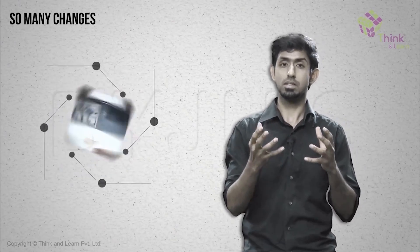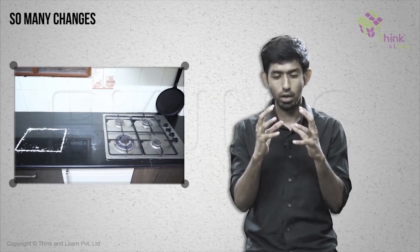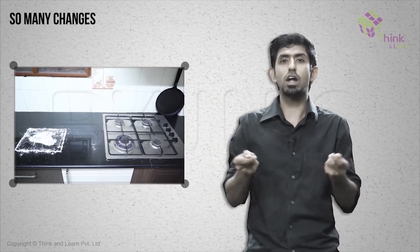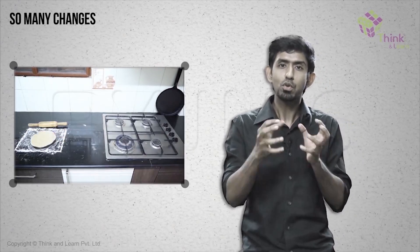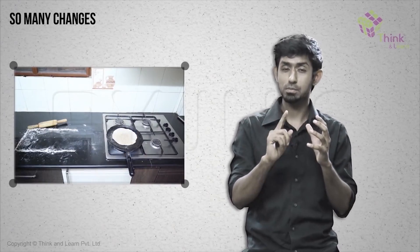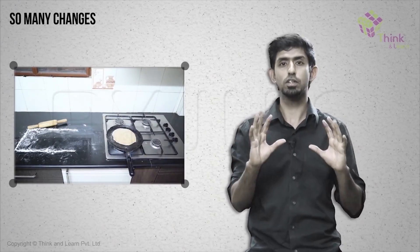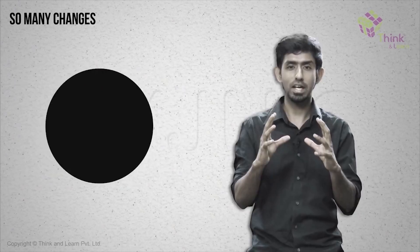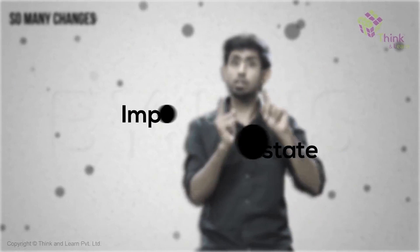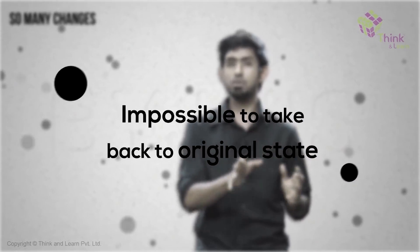If you heat something — like say a chapati — you roll a round piece of dough into a flat one and then you can roll it back. That's reversible. But if you heat it and make a chapati or a roti out of it, then it's very difficult to take it back to its original state. Maybe even impossible.